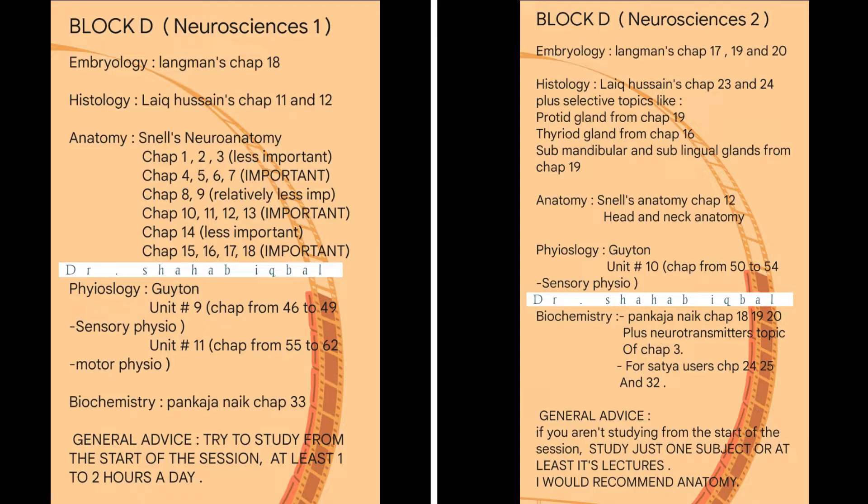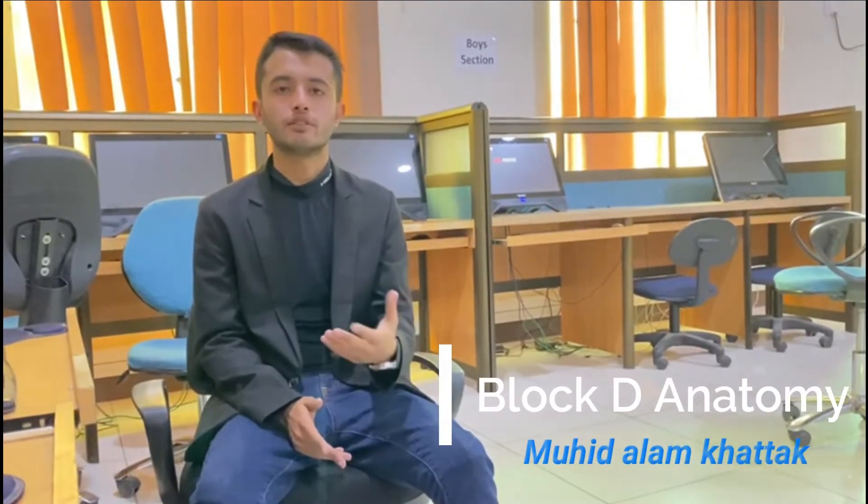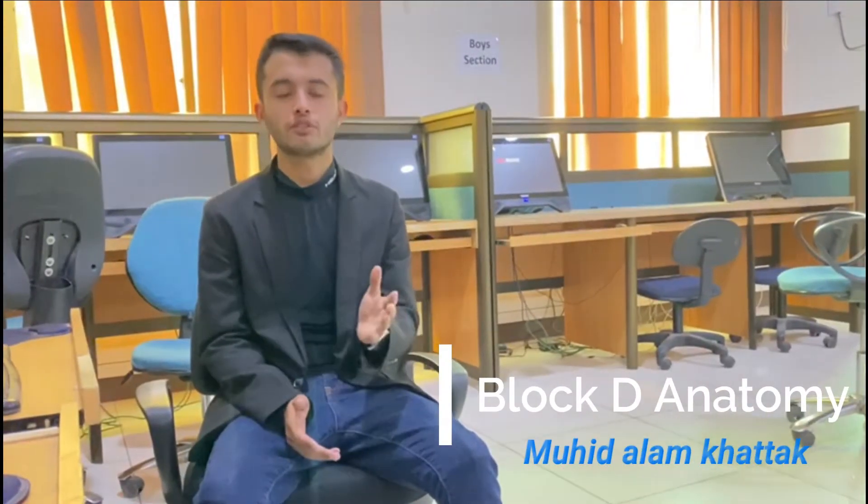Simply follow the guidelines given on the page. For example, if you are studying the embryology portion of Block B, go for Langman chapter 18 — that is the embryology portion of NS1 of Block B. Everything is written on the page, so take a snapshot and now let's go to the actual guidelines on how to study each portion. We will cover Block B neuroanatomy first.